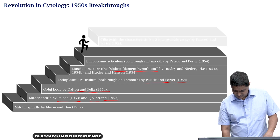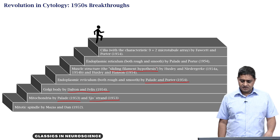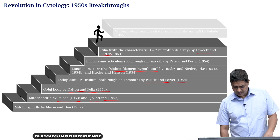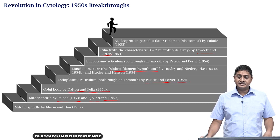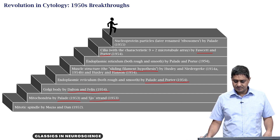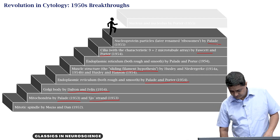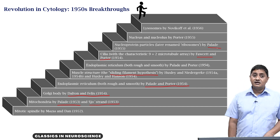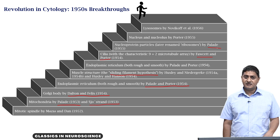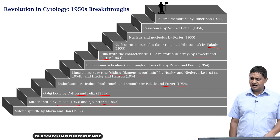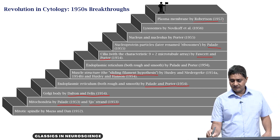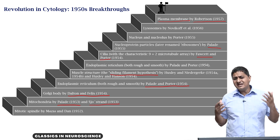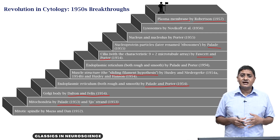Cilia with the microtubule array were described by Fawcett and Porter in 1954. Ribosomes — at that time called nucleoprotein particles — were identified by Pallet in 1955. The nucleus and nucleolus were described by Porter in 1955. Lysosomes were identified by Novikov and colleagues in 1956. Finally, the plasma membrane was visualized by Robertson in 1957. Between 1952 and 1957, almost all major organelles within an animal cell were visualized using the electron microscope.